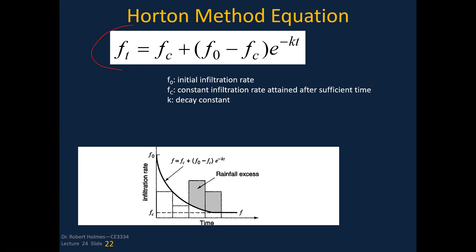This is the Horton equation, which has the infiltration as a function of time. This is basically the constant infiltration rate fc that you reach once it gets out to a certain length of time.